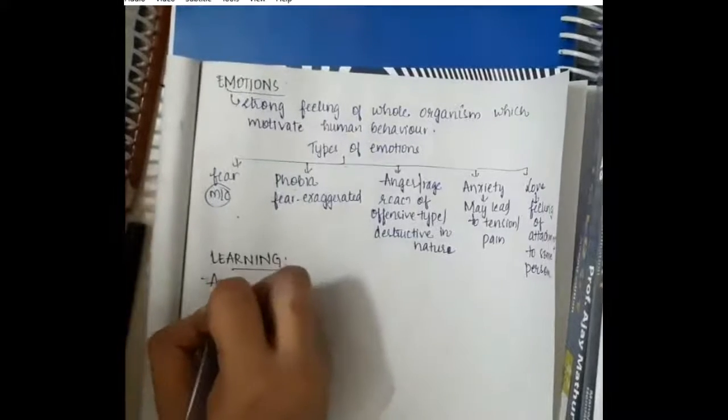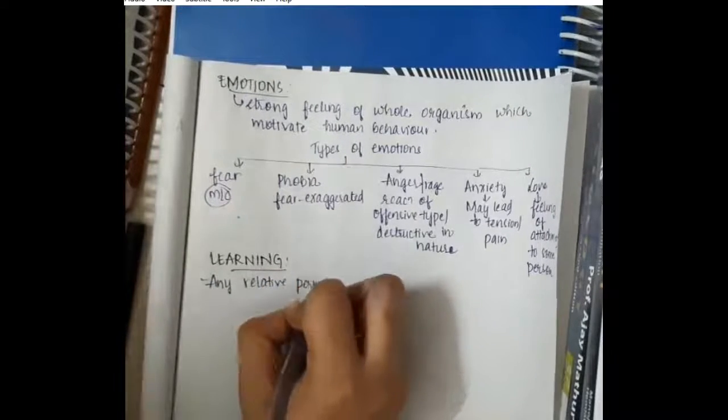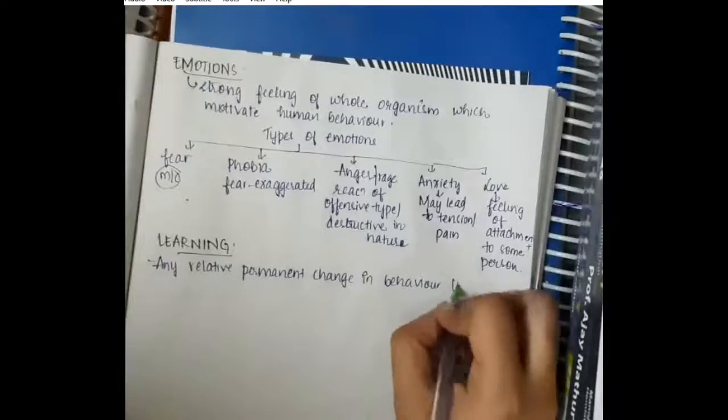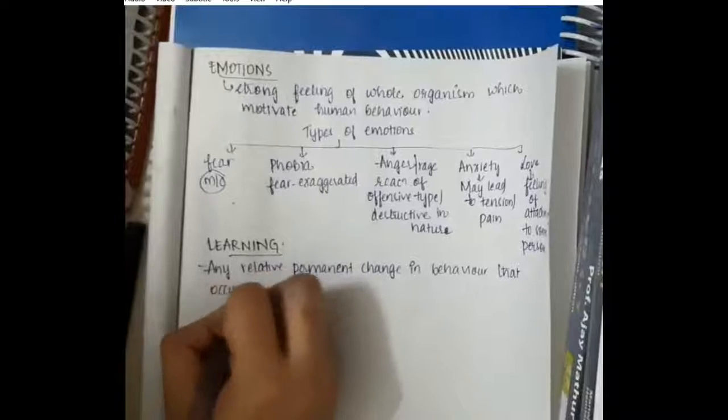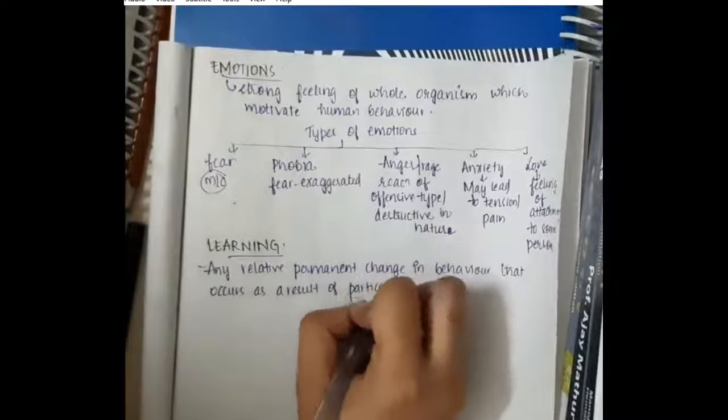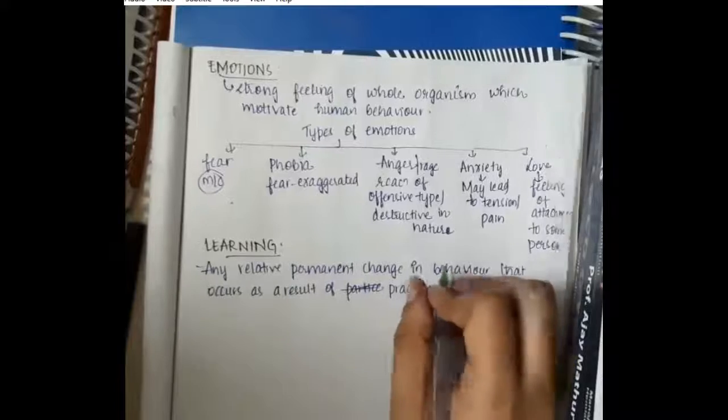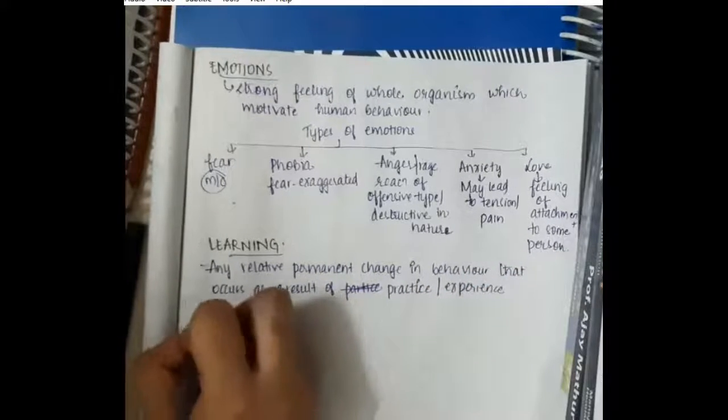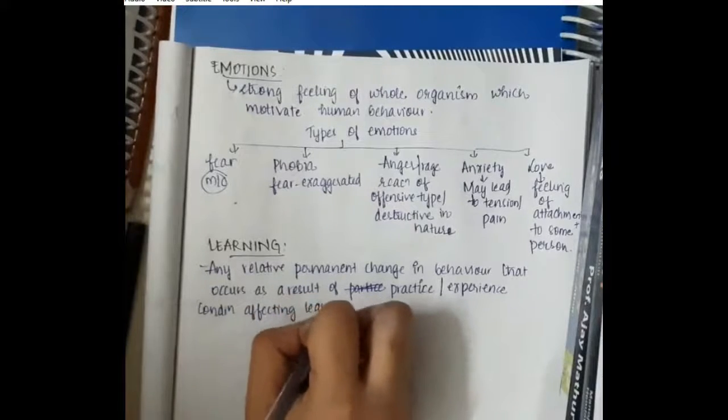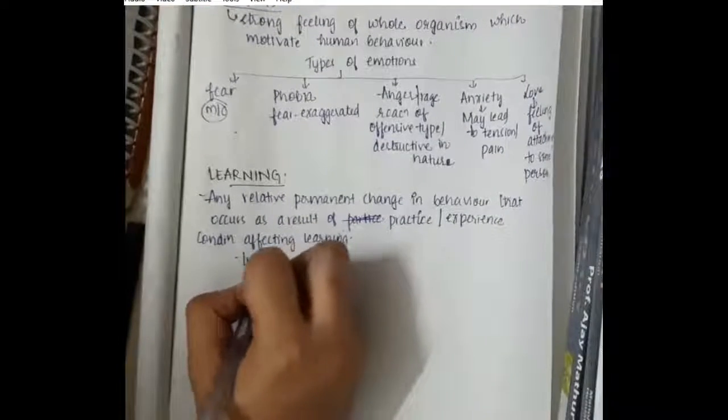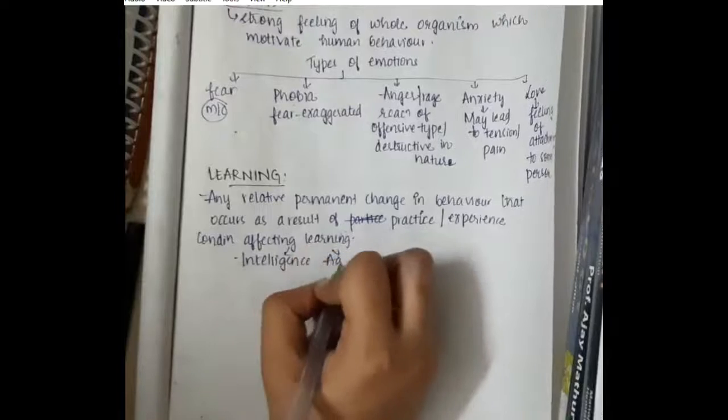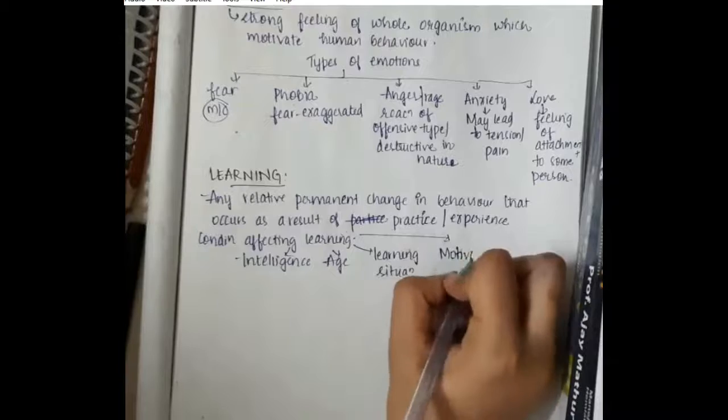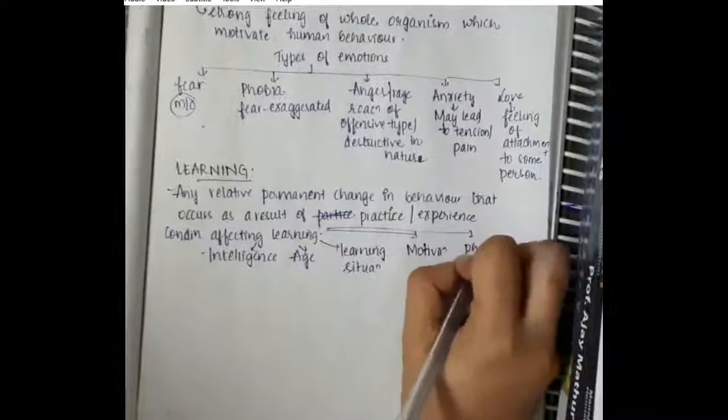Next we have learning. Learning is any relatively permanent change in behavior that occurs as a result of practice and experience. Conditions affecting learning are intelligence, age, learning situation, motivation, and physical health.